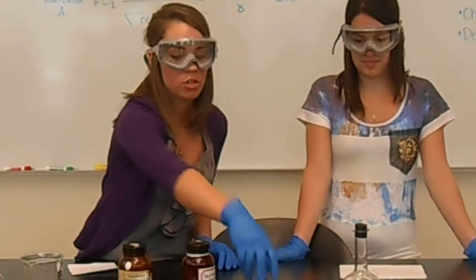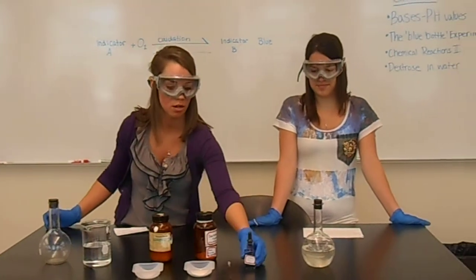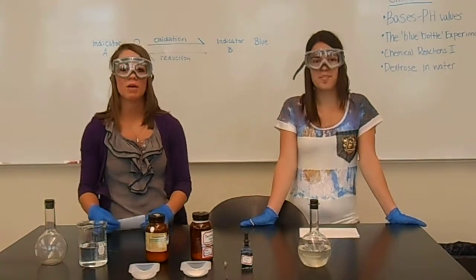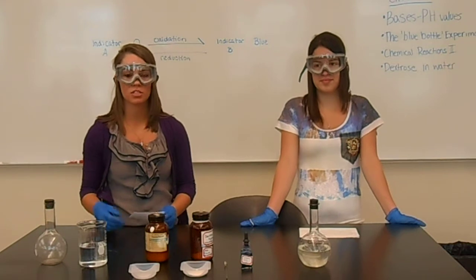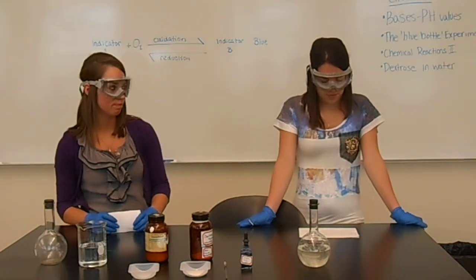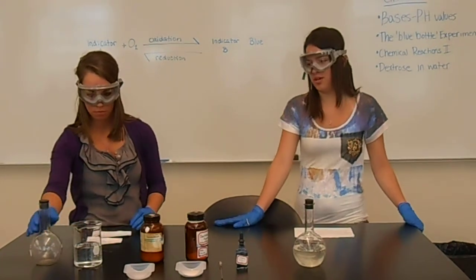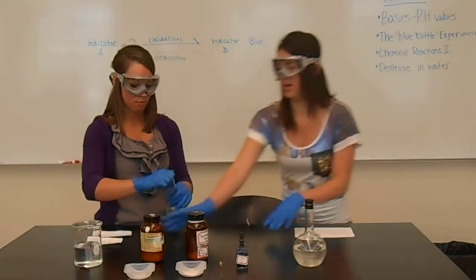And then you're going to use six to eight drops of the methylene blue indicator. Since we're using acids and bases, it's best advice to use gloves and also goggles. We're going to start by dissolving 8 grams of potassium hydroxide into 300 milliliters of the distilled water.